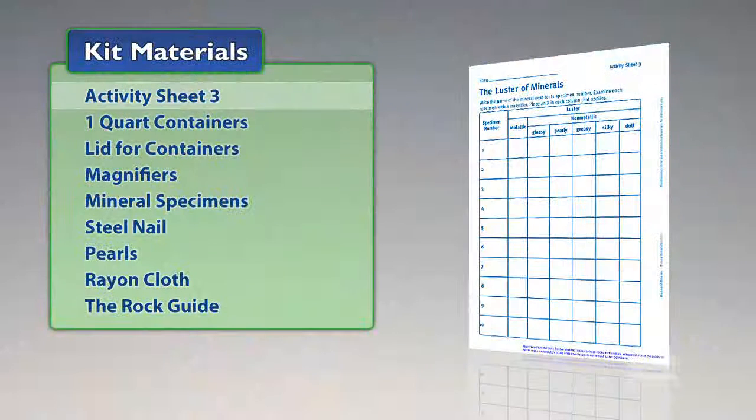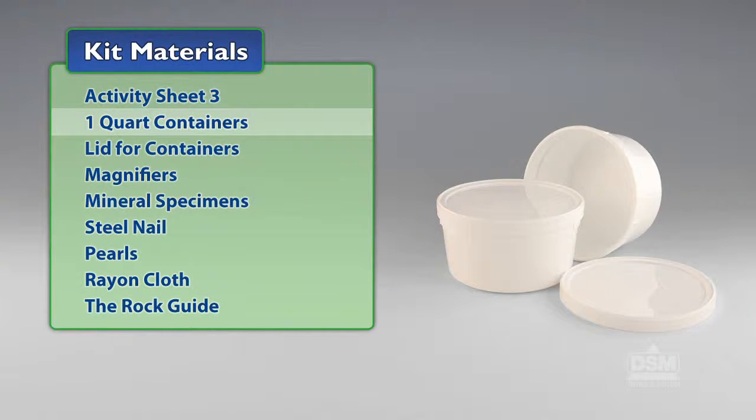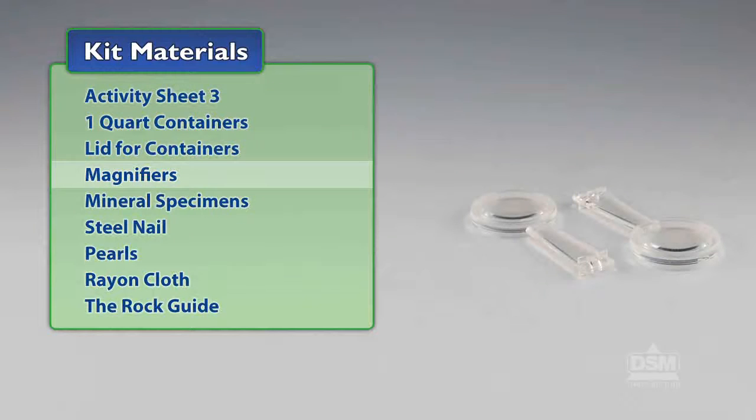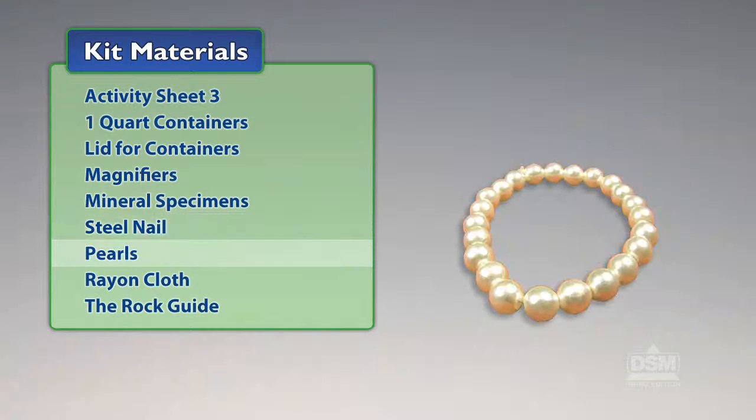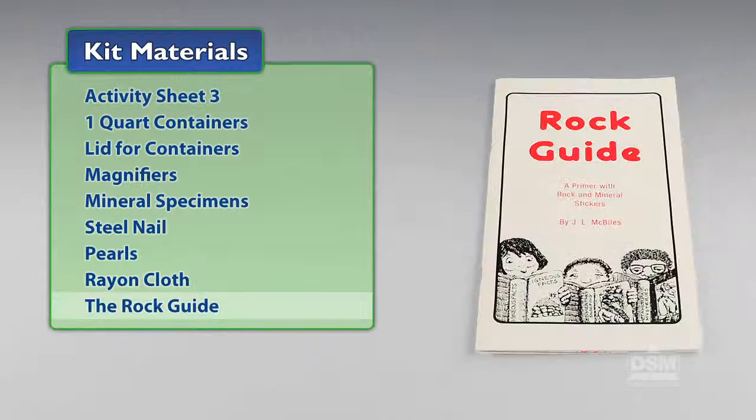You will need the following materials from the kit: Activity Sheet 3, 1-quart containers, lid for containers, magnifiers, mineral specimens, steel nail, pearls, rayon cloth, and the rock guide.